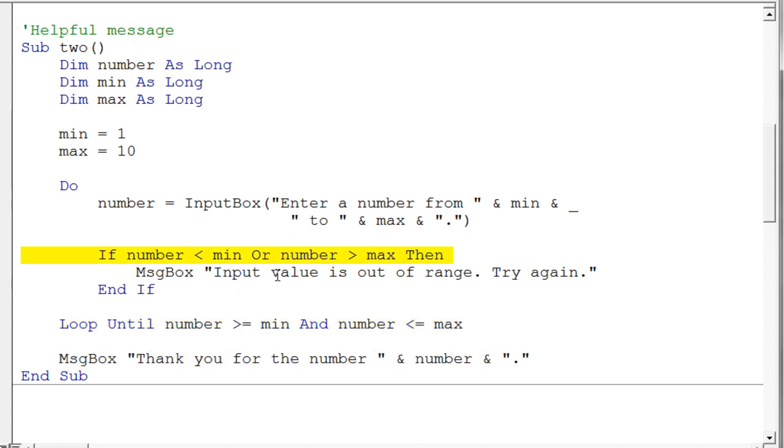But we've added one slight little extra piece here. We've added an if statement. And the if statement checks to see if the number is less than min or the number is greater than max. Because if this is the case, we want to kind of warn the person with a message box that their numbers are out of range. So the primary difference here is that we're just being a little bit more user friendly.